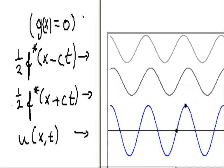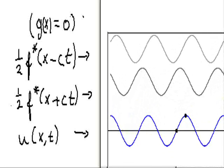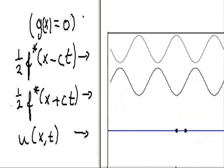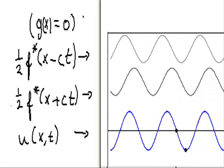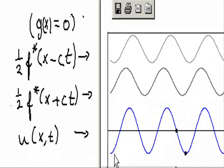Let's recall that if this velocity g(x) is equal to 0, then the function u(x,t), the solution which we have here animated in blue color,